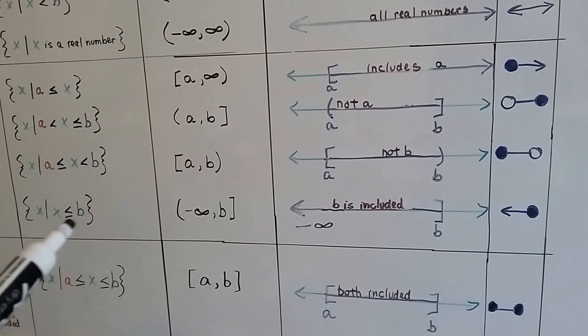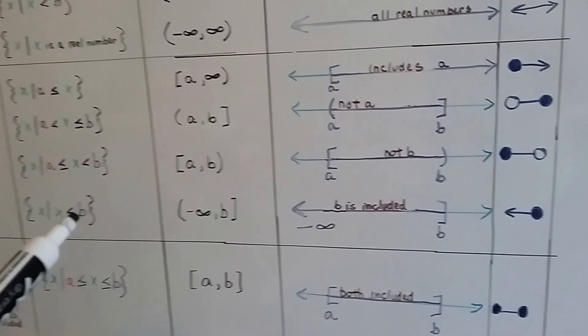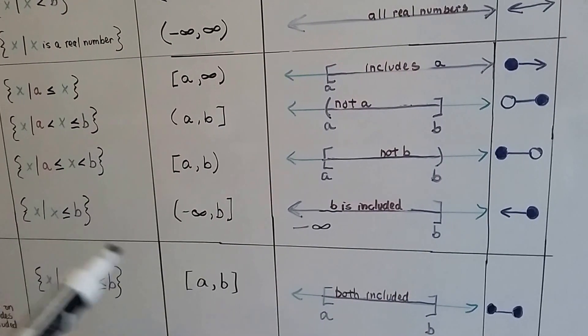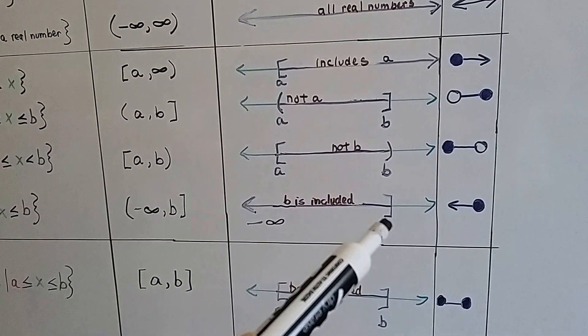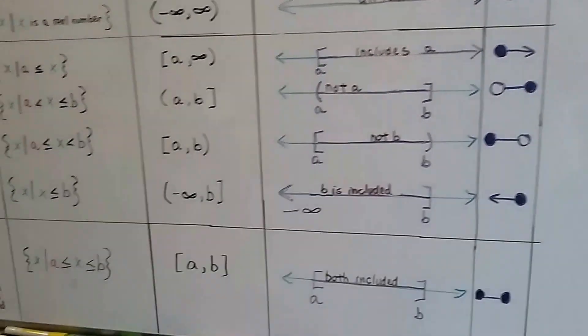If x is less than or equal to b, if it's or equal to, that means it includes b. So, we've got negative infinity and including b. So, b is included. We've got our bracket, and we've got a filled-in dot.